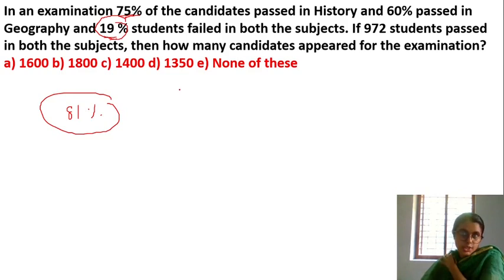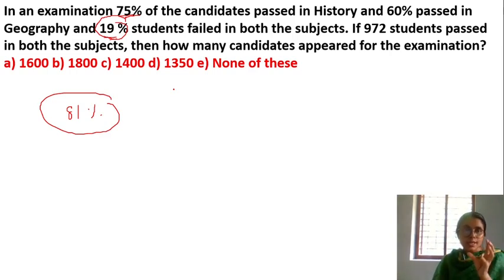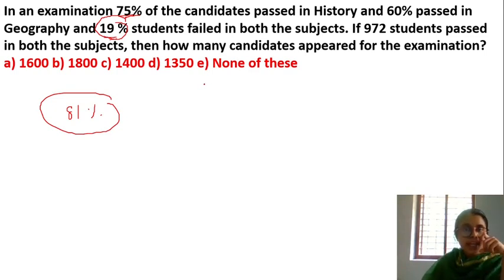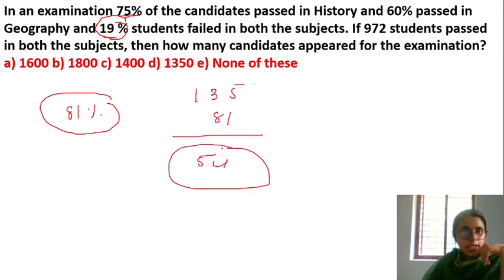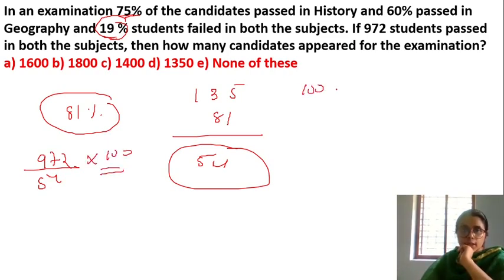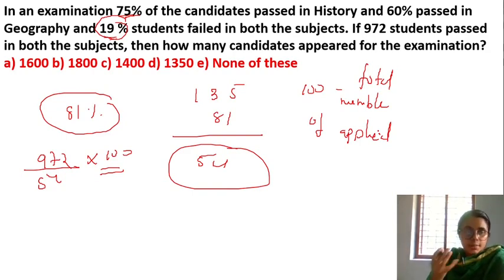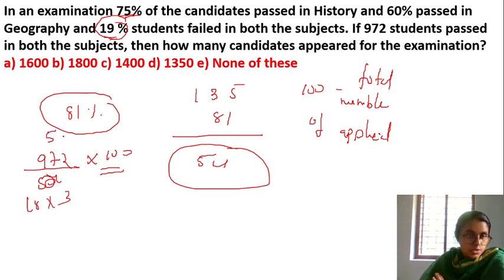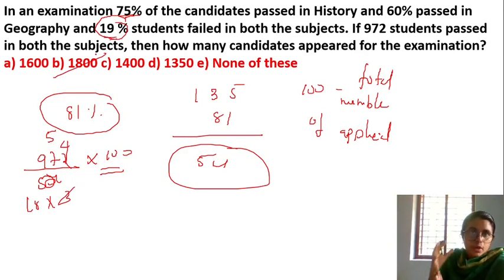75% passed in history and 60% passed in geography. Adding: 75 plus 60 equals 135. Now 135 minus 81 — since 19% failed in both, those who passed in at least one is 81%. So both passed equals 135 minus 81 equals 54%. Since 54% equals 972, total candidates equals 972 divided by 0.54 equals 1800. The answer is 1800.